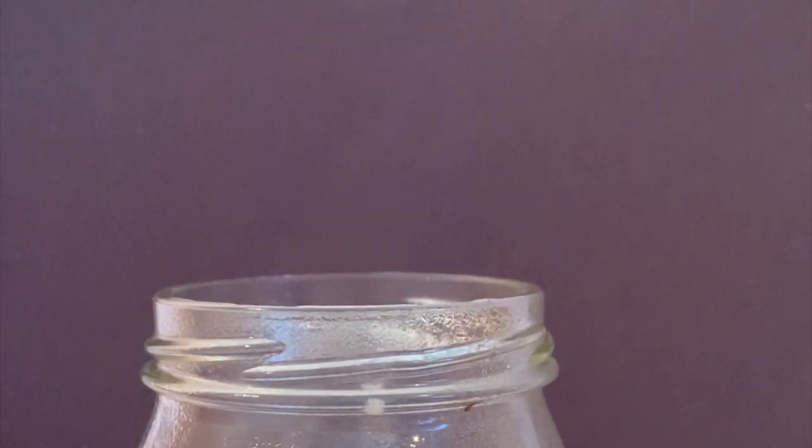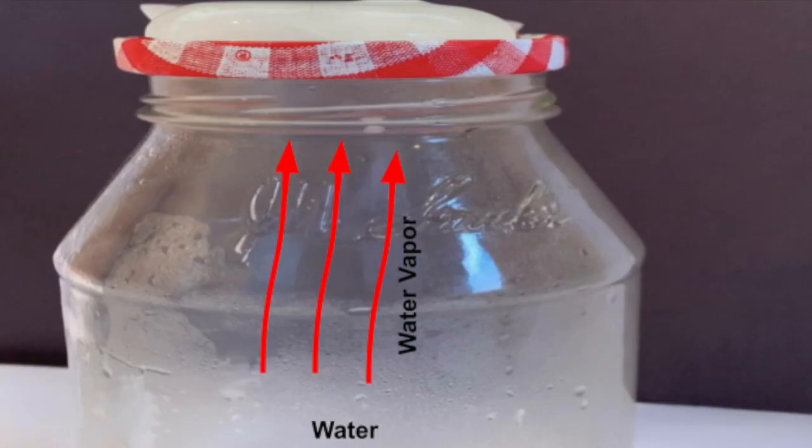So now let's talk about how this experiment works and how clouds are formed. When you heat the jar with water, the water turns into water vapor, which is a gas form of water.